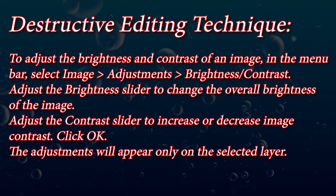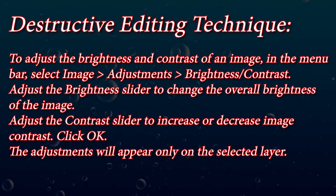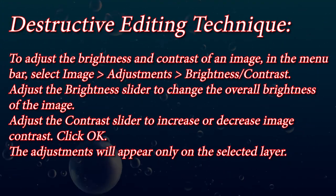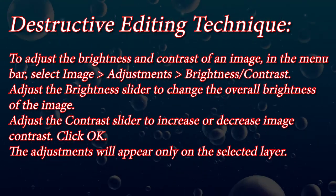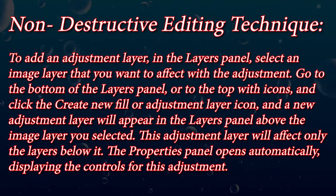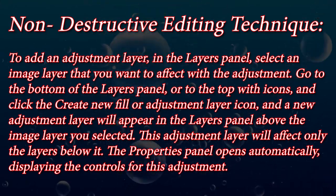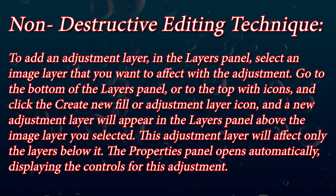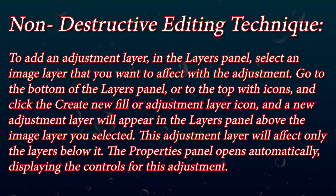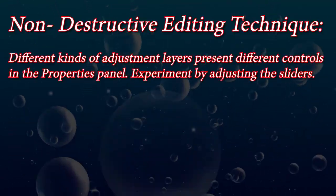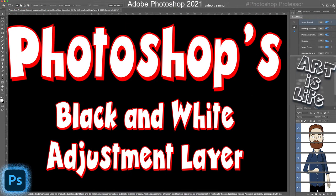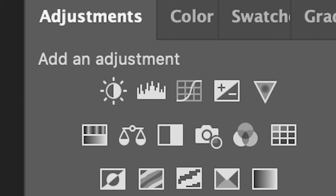To adjust the brightness and contrast in the menu bar: Image > Adjustments > Brightness/Contrast. Adjust the brightness slider to change overall brightness, the contrast slider to increase or decrease contrast, then click OK. The adjustments appear only on the selected layer. To add an adjustment layer instead: in the layers panel, select the image layer you want to affect, then choose the brightness and contrast adjustment layer from the bottom of the layers panel or from the adjustments icons. A new adjustment layer appears above the selected layer and only affects the layers below it. The Properties panel opens automatically with the controls. In later videos, I'll cover the hue saturation and black and white adjustment layers — all of which allow you to customize your image as you want.